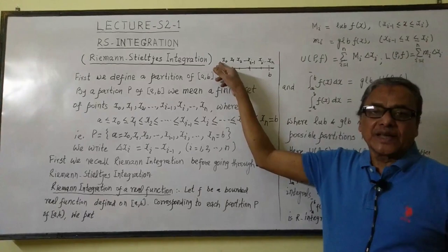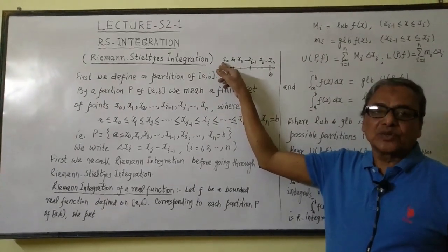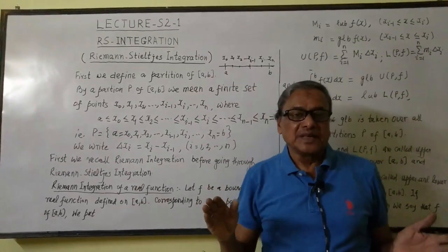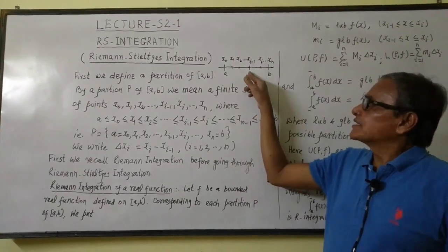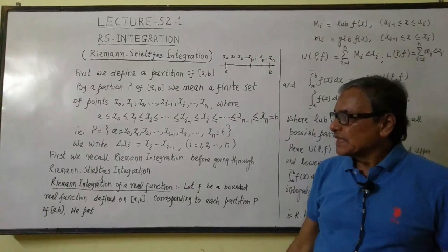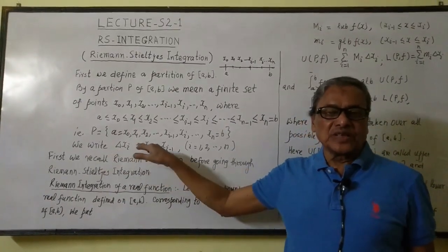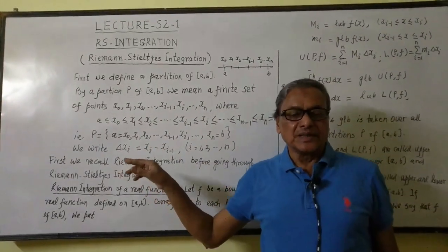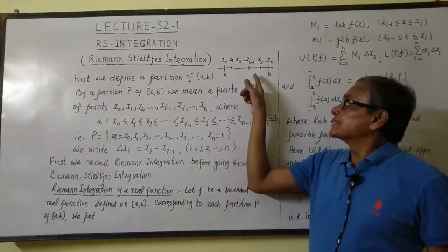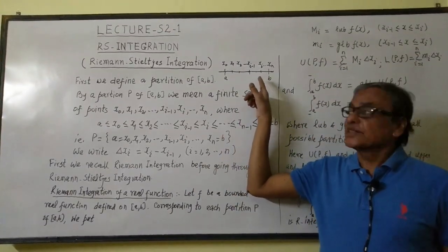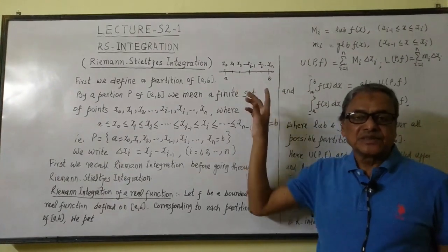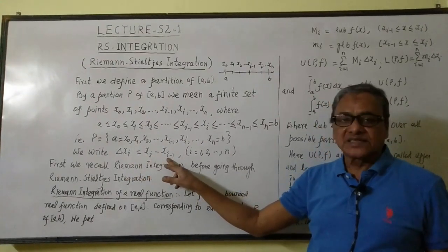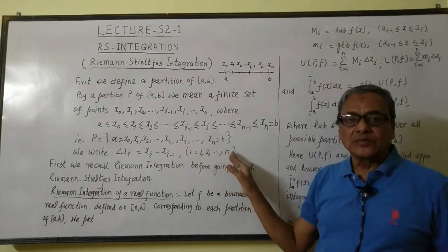So the total number of points are n plus 1, being from x0 up to xn, and we divide this interval [a,b] into n parts, n subintervals. And this is the i-th subinterval [xi-1, xi]. Now here I write delta xi equal to xi minus xi-1. This actually gives the length of this subinterval. Delta xi denotes xi minus xi-1 where i goes from 1 up to n.